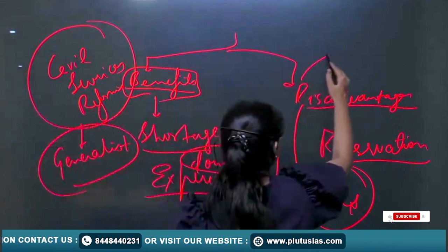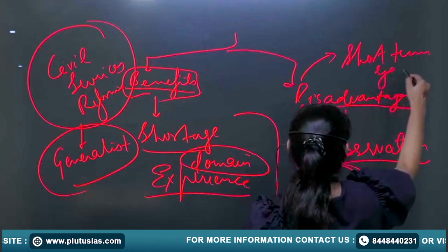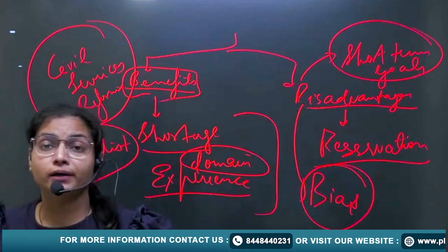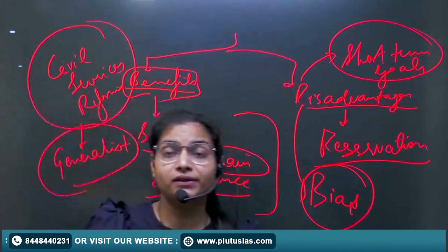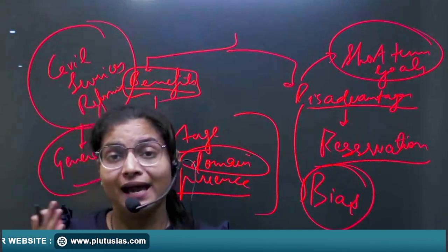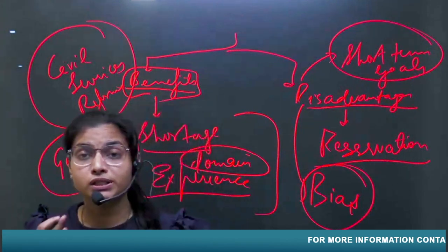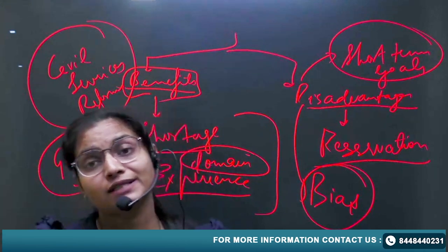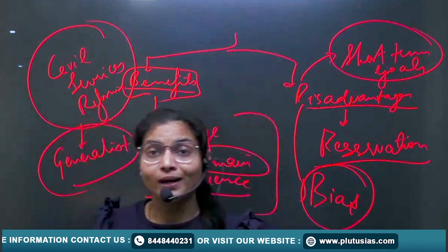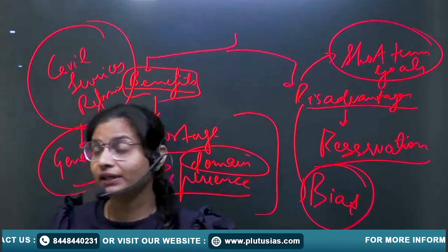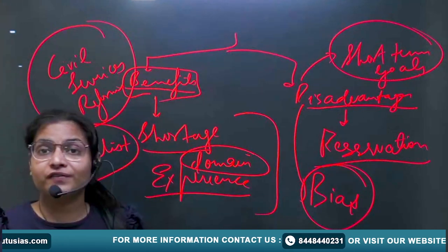There could be bias in appointments, as private individuals may enter the public sector through the back door. Moreover, private sector individuals will have short-term goals, hired for only three to five years, and will not focus on long-term commitment to public service. They may also struggle to adjust to bureaucratic culture. This topic — lateral entry — falls under civil services reforms in GS2, so prepare both benefits and disadvantages.